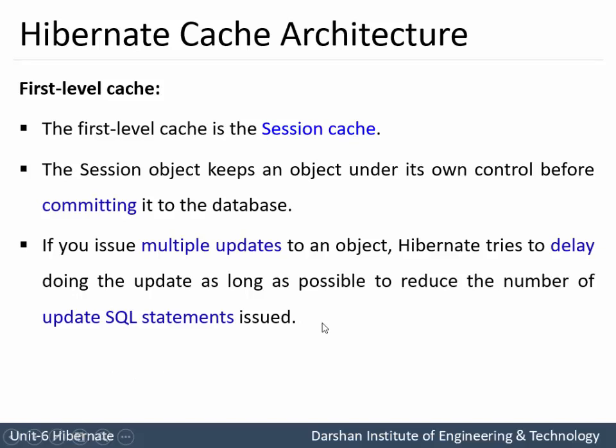For example, if an object named 'result' is in the Java application and it is being updated repeatedly, Hibernate will try to delay this update as long as possible. Because if you are updating to the database every time, database hits increase, which reduces overall performance. To improve performance, Hibernate delays updates, and only after the final update is committed does it reflect the changes to the database.